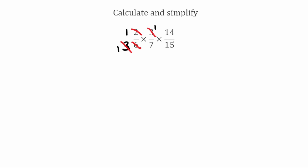We want to look again for highest common factors greater than 1. On the numerator I've got 1, 1, and 14. On the denominator I've got 1, 7, and 15. We can see on the numerator we've got 14, and on the denominator we've got 7. The highest common factor of 7 and 14 is 7, so I can divide both by 7. 7 divided by 7 gives 1, and 14 divided by 7 gives 2.